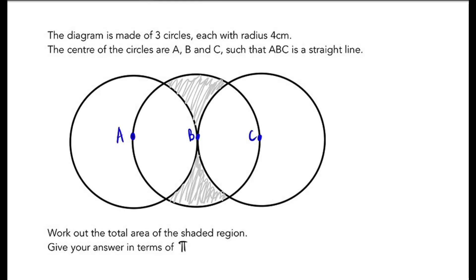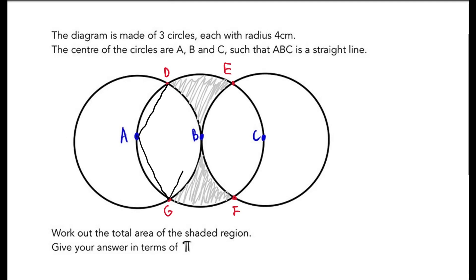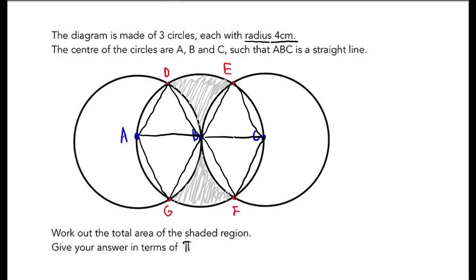For our final question — the hardest ever question in a Maths GCSE paper — the diagram is made of three circles, each with radius 4 centimetres. The centres are A, B, and C, such that A, B, C is a straight line. Work out the total area of the shaded region. We'll find the area of the middle circle and subtract the smaller sections. We label four intersection points D, E, F, and G, then draw lines connecting A, B, and C to these four points.